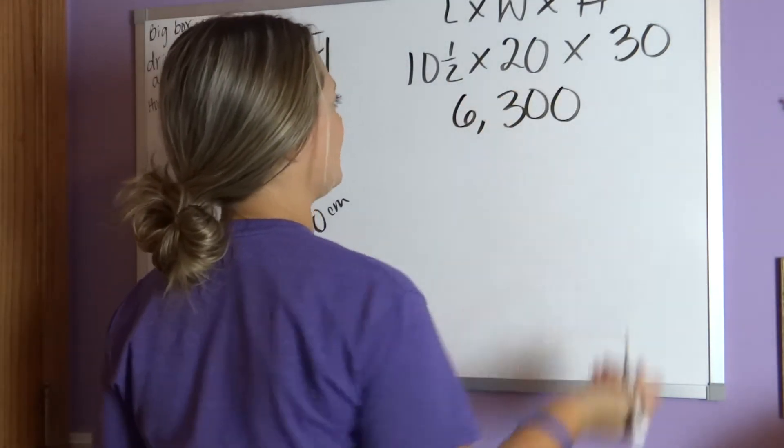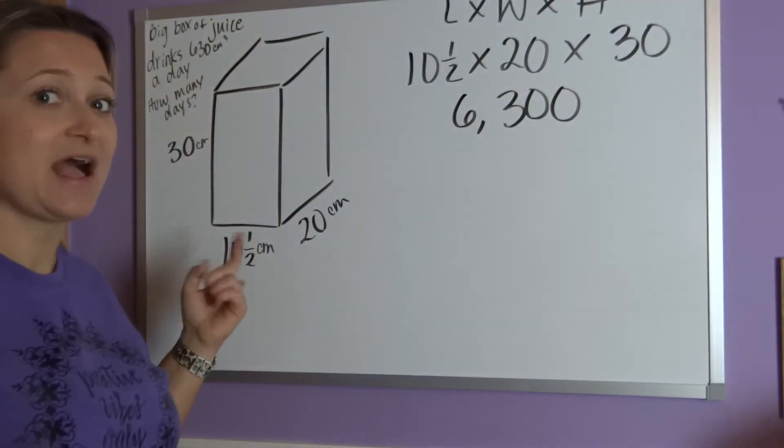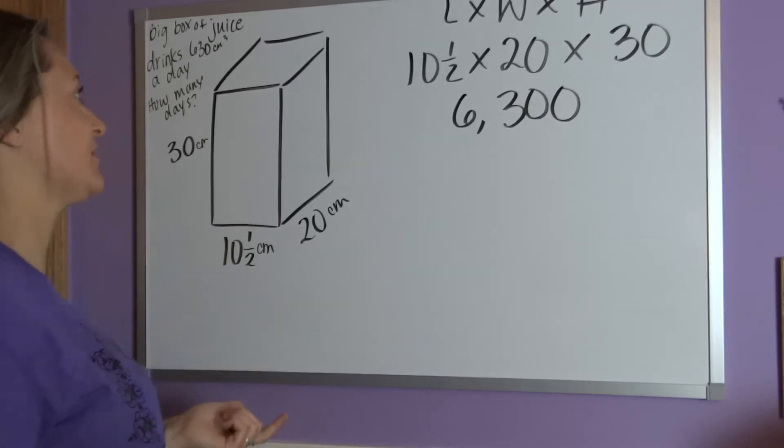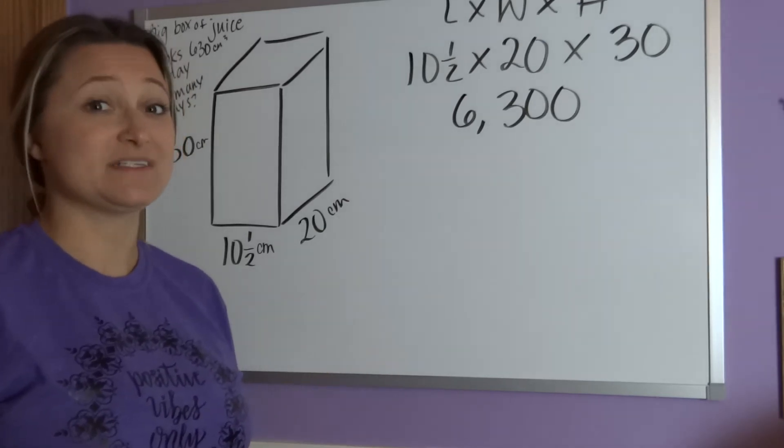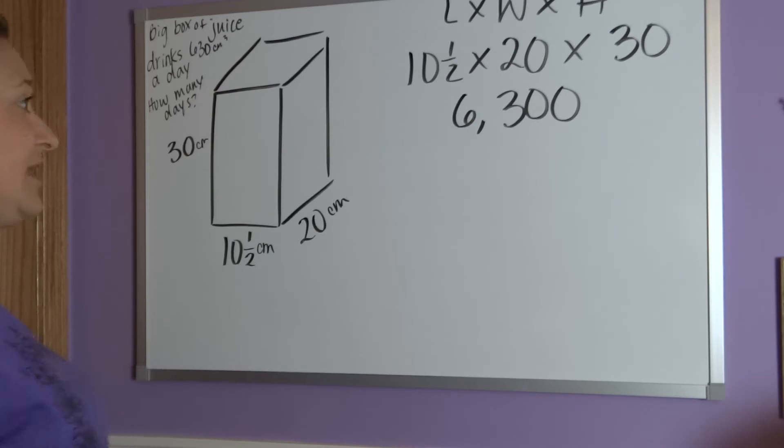Okay, so now I found the volume of this container. That's not the answer to the word problem though, because it was saying, well, he drinks 630 milliliters of juice, sorry, not milliliters, centimeters cubed of juice a day.